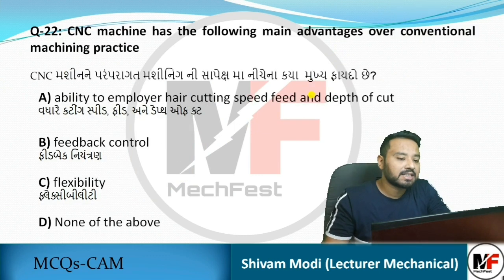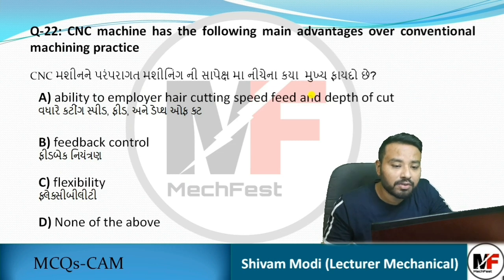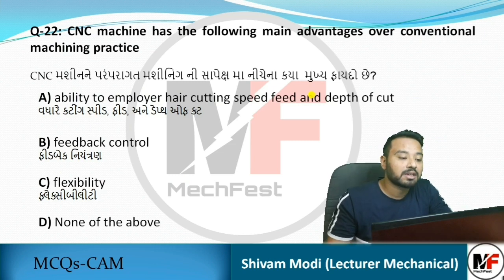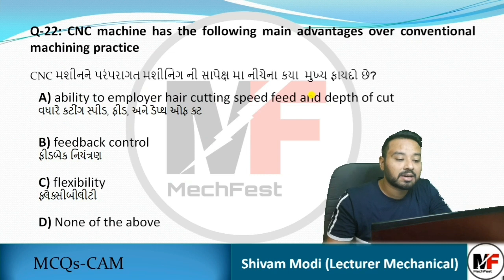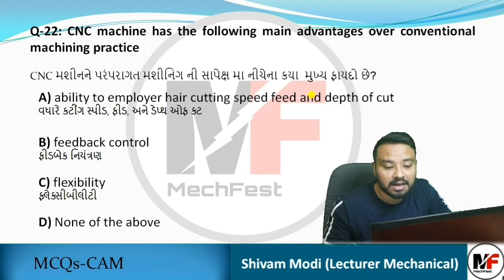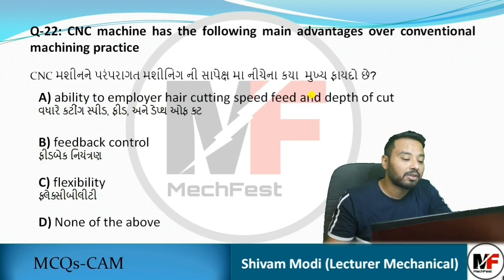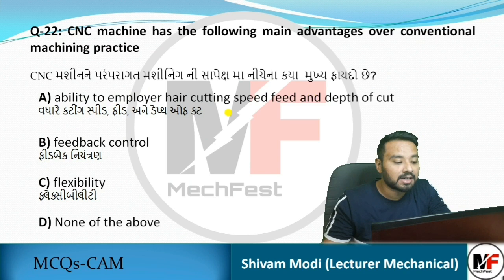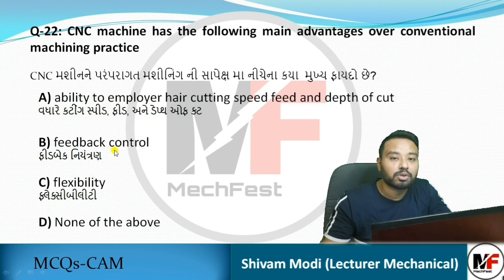Next MCQ: CNC machines have the following main advantages over conventional machining practice. Looking at the three options, feedback control is one of the main advantages of CNC over conventional machining.